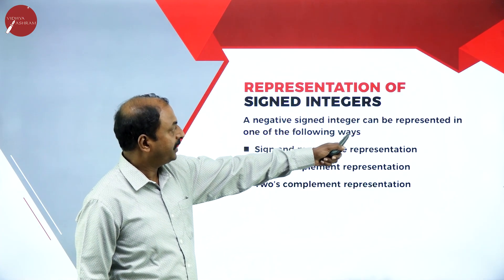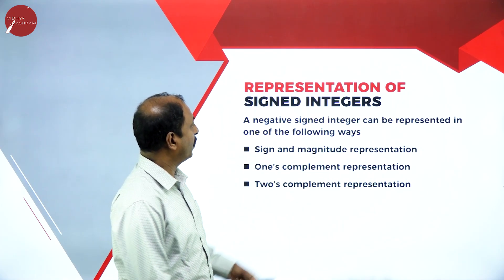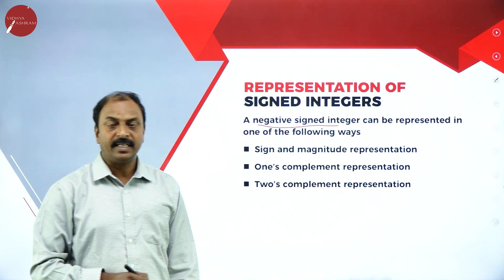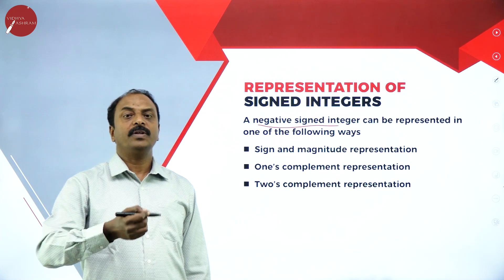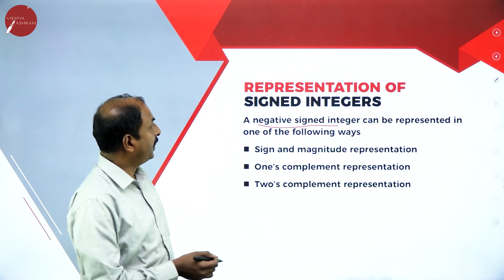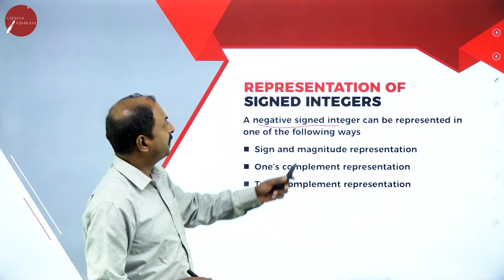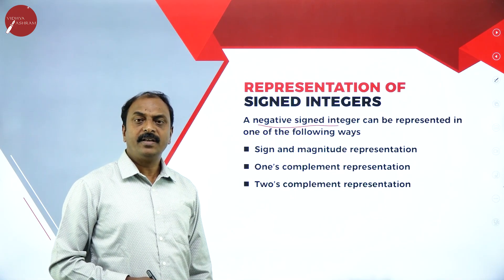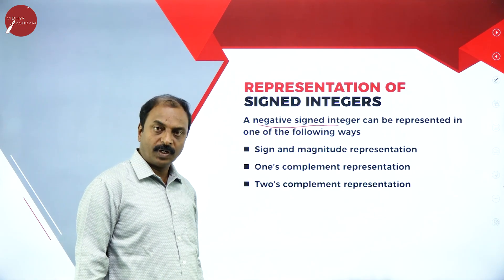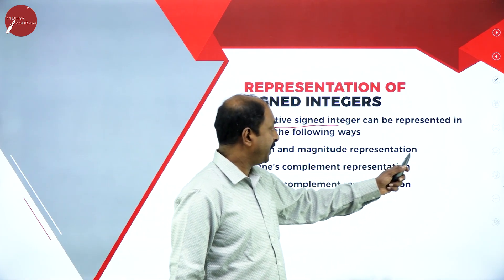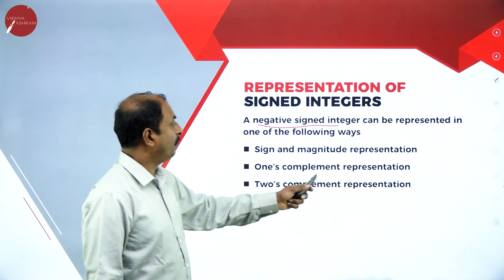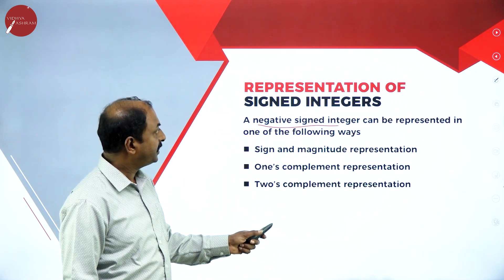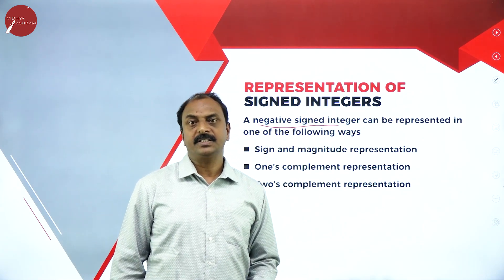A negative signed integer can be represented in one of the following ways. What is the meaning of signed integers? They are negative numbers, or negative integers. So how do we represent negative numbers in computers — that is the representation of signed integers. There are three methods: sign and magnitude method, one's complement representation, and two's complement representation.